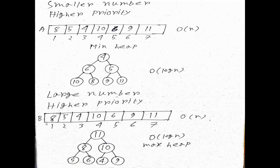Consider an example array where the number itself represents its own priority — for example, 8, 5, 4, 10, 11. If smaller number has higher priority, then 4 has the highest priority and is inserted first. If larger number has higher priority, then 11 has the highest priority and is inserted first.